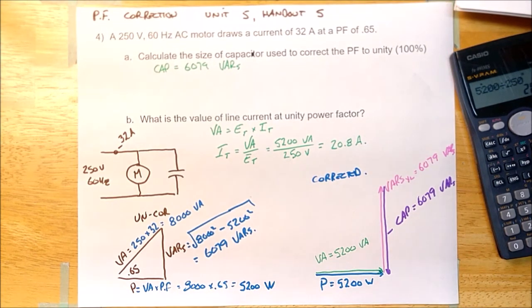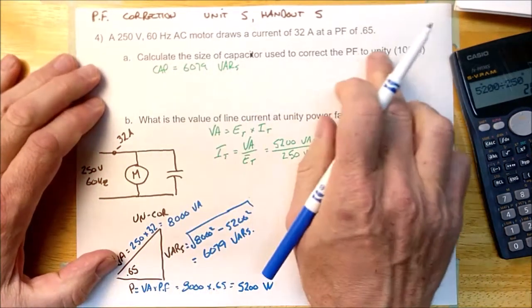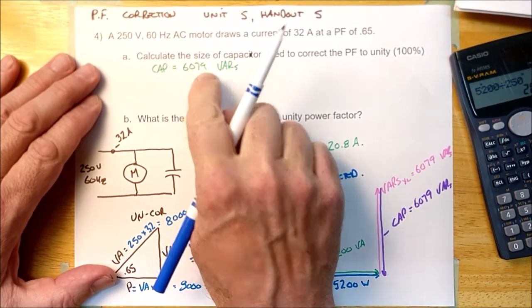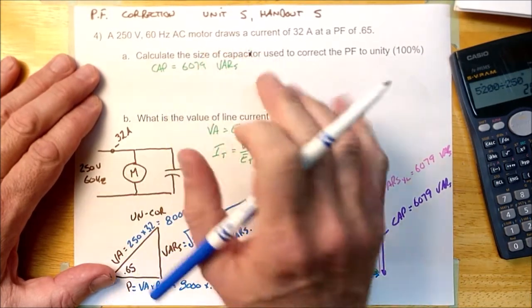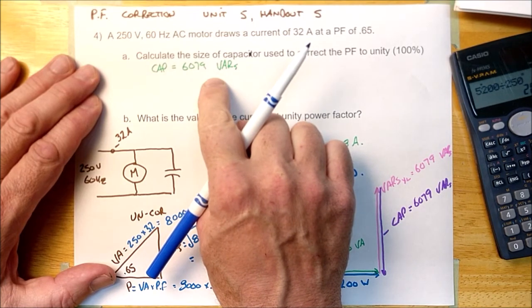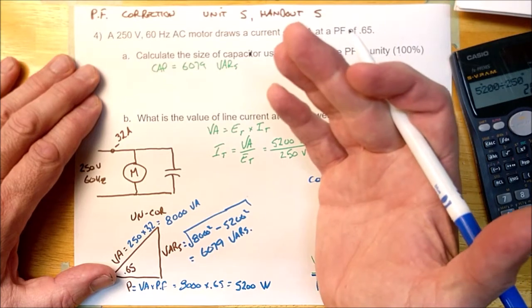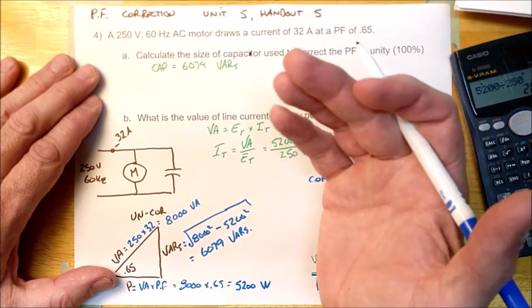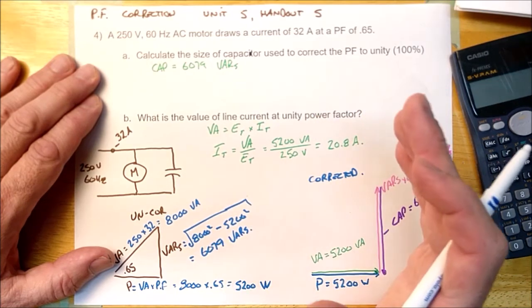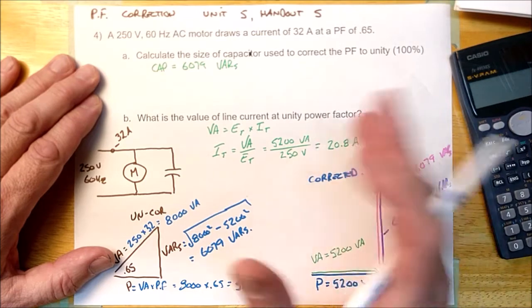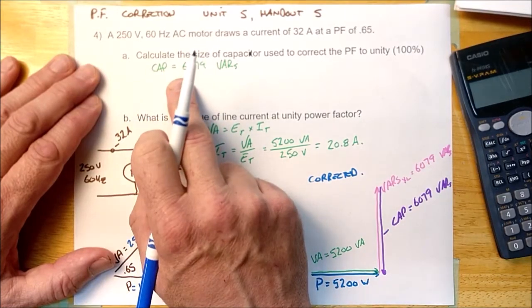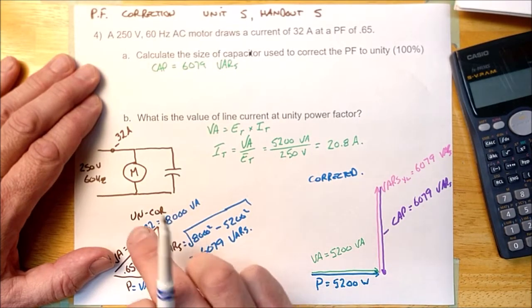Now there's one more thing I want to show you because some of the homework questions are going to ask you how many microfarads this capacitor is. So it's going to ask you to calculate the capacitor in VARs. And by the way, power factor correction capacitors are sold to you in VARs. We're going to calculate how many microfarads it is. But understand that when you order a power factor correction capacitor, you're going to order in VARs or KVARs. It's just like baseboard heaters. When you go and order a baseboard heater, you're not going to ask for a certain amount of ohms. What you're going to ask for is how much power. Same with caps. You're going to order them in VARs or KVARs. This is going to be a 6KVAR capacitor that you need to correct this motor.